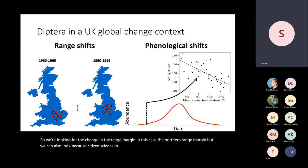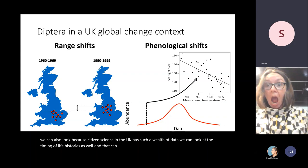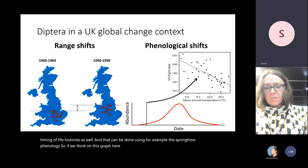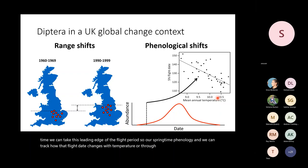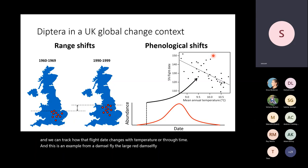Because citizen science in the UK has such a wealth of data, we can also look at the timing of life histories — the springtime phenology. If we think about this flight distribution here, the distribution of dates through time, we can take the leading edge of the flight period — our springtime phenology — and track how that flight date changes with temperature or through time. This example is from the large red damselfly.